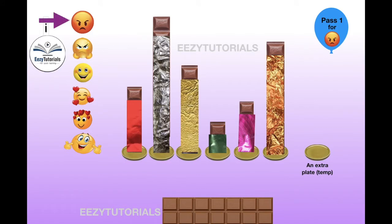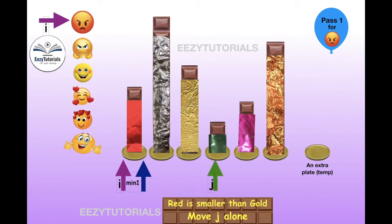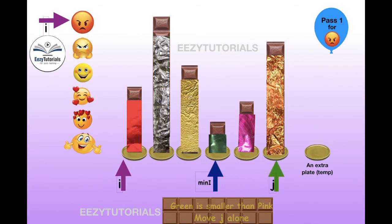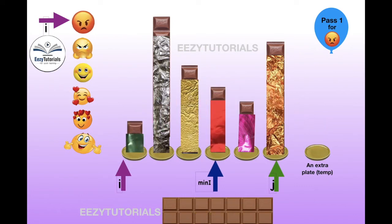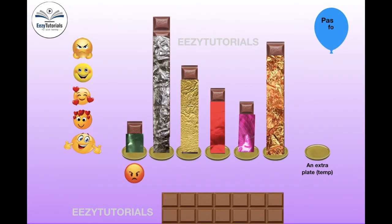Pass 1. Compare minimum index I and J till the end, and place the minimum index at the minimum value. Comparing red and green — green is minimum, so move the minimum index to green. We have reached the end, so swap. The first smallest chocolate is identified and it is allotted for the first girl.